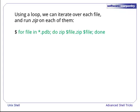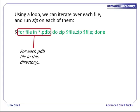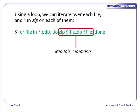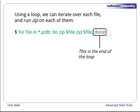Using a loop, we can iterate over each file and run zip on each of them. So how does this work? The first part says we wish to iterate over our PDB files. And on each iteration, let us run our zip command. The done part shows the end of the loop, and instructs the loop to do the next file in our PDB list if one exists.